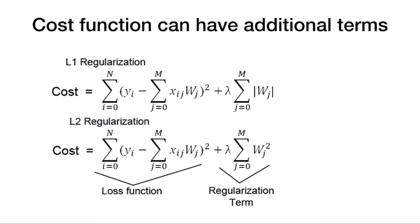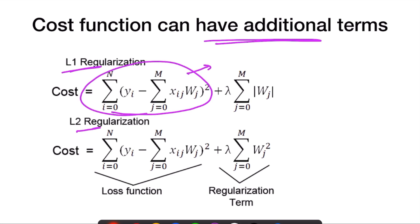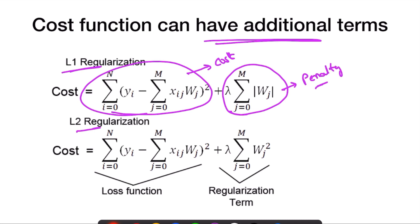As I mentioned, cost function can have additional terms. For L1 regularization and L2 regularization, the first term is the cost function — the average of all error values — whereas the second term corresponds to regularization, a penalty term on the weights.